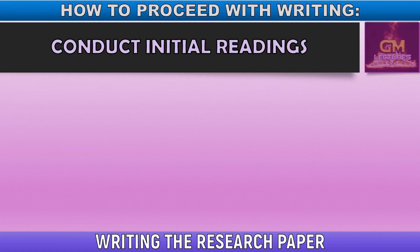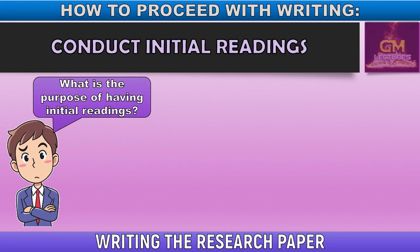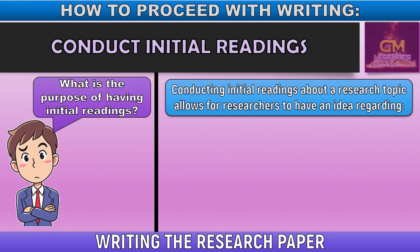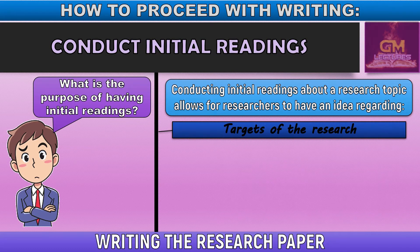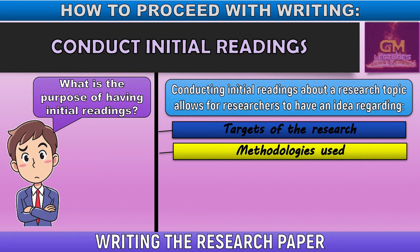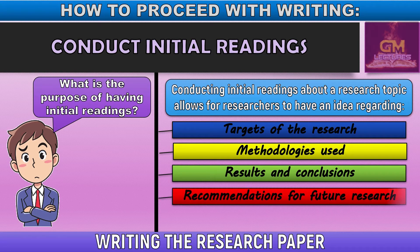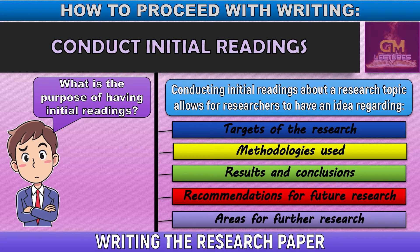After identifying a topic, we proceed with conducting initial readings. Conducting initial readings about a research topic allows researchers to have an idea regarding the targets of the research, the methodologies used by other researchers in relevant studies, the results and conclusions, and recommendations for future research. This gives you inspiration regarding methodologies you'll use, what information you'll need, and how to proceed with your study to avoid repetition of results.